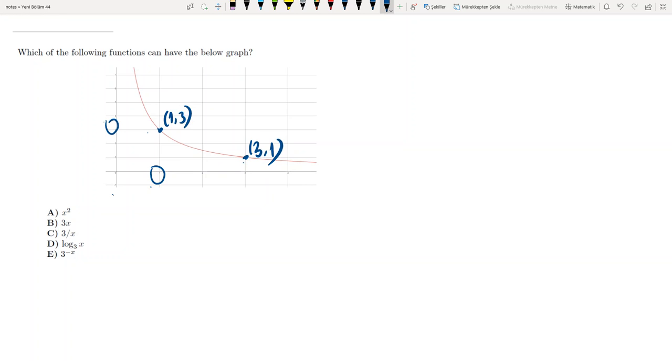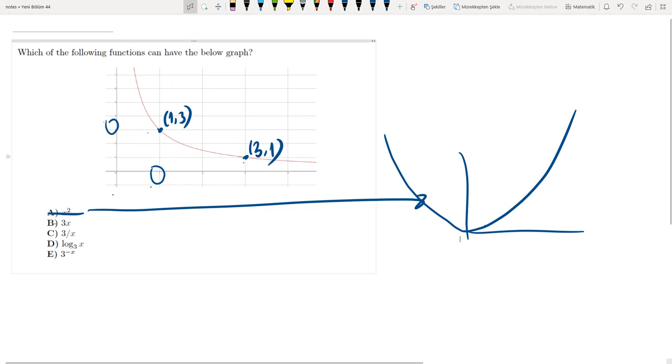x square? Exactly no, because one square is not three or three square is not one. You see, I don't need to know that x square has such a graph. Whether I know or not, it is not necessary in this question. Just check the points and reach the answer.